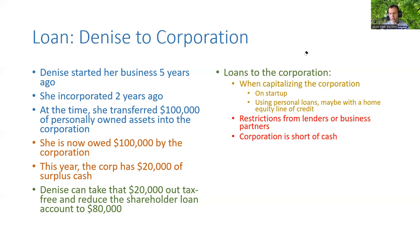She might be owed money by her corporation but restricted by some sort of covenant from a lender. We had this once — a lease agreement where we were not permitted to take any compensation beyond our current level until the lease was fully paid. You might have business partners with similar covenants in place, or the corporation might just be short of cash. She might have a salary of $100,000 a year but the corporation can only afford to pay her $70,000, so she takes the $70,000 and leaves a $30,000 shareholder loan balance to be paid later. Seek accounting advice.